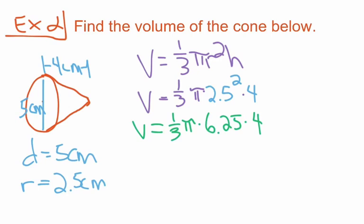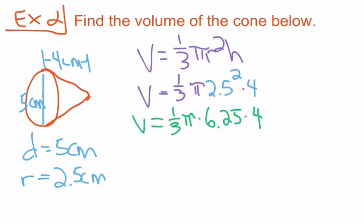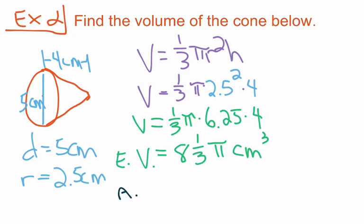For our exact value, we take one-third times 6.25 times 4, and we get V equals 8 and one-third pi centimeters cubed. Written as an improper fraction, that would be V equals 25 over 3 pi centimeters cubed. For our approximate volume, we multiply 8 and one-third by pi, and we get V approximately equal to 26.2 centimeters cubed.